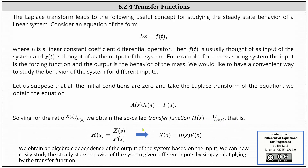That is, H(s) equals X(s) divided by F(s), which also implies X(s) equals H(s) times F(s). We obtain an algebraic dependence of the output of the system based on the input. We can now easily study the steady state behavior of the system given different inputs by simply multiplying by the transfer function H(s).